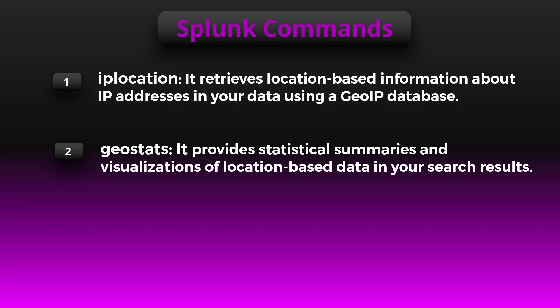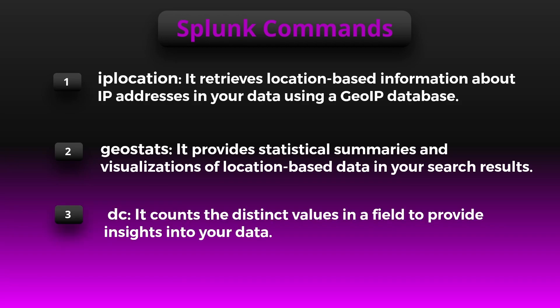The next command is geostats. Once you have the geographic location information, you can use the geostats command to summarize and visualize it in various ways. For example, you can group events by country, state, or city and calculate metrics like count, sum, average, or standard deviation for each group, helping you identify trends or patterns specific to certain regions.